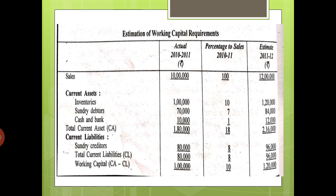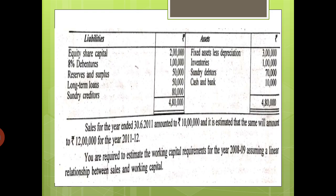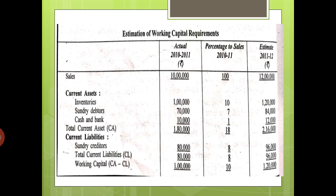Likewise, we total the current assets, then show current liabilities. There is only one current liability item: sundry creditors at 80,000. So 80,000 divided by 10 lakhs equals 8%. Current liabilities are totaled and the balance is working capital — current assets minus current liabilities. In the first year, it is 1 lakh 80,000 minus 80,000 equals 1 lakh. Working capital is 1 lakh.